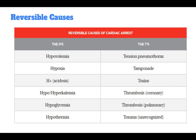The reversible causes of cardiac arrest are something that should always be considered. The H's are hypovolemia, hypoxia, acidosis, hypo- or hyperkalemia, hypoglycemia, and hypothermia. The T's include tension pneumothorax, tamponade, toxins, thrombosis, pulmonary, and trauma.